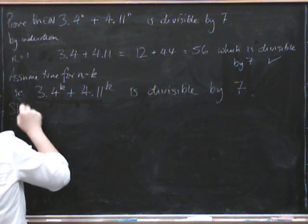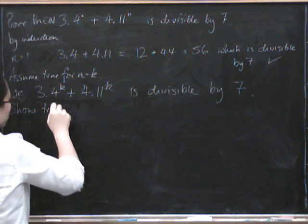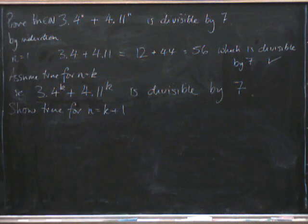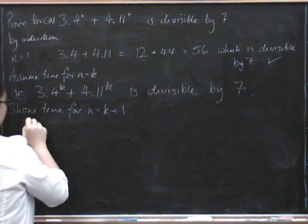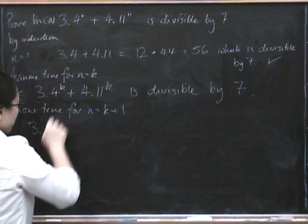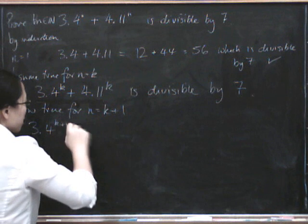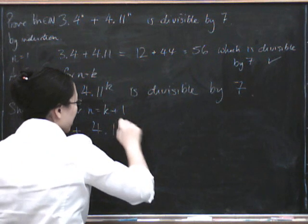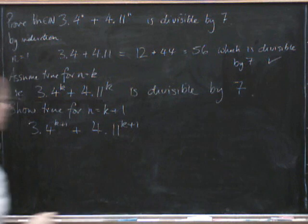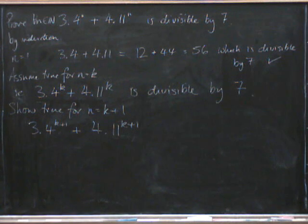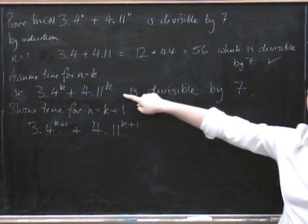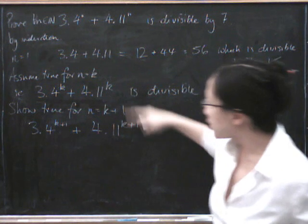So, we need to show that it's true for n equals k plus 1. So, what's the number that we're looking at in this case? It's 3 times 4 to the k plus 1, plus 4 times 11 to the k plus 1. Now, just stare at that expression for a bit. What we have to do is try and relate it to the previous one.